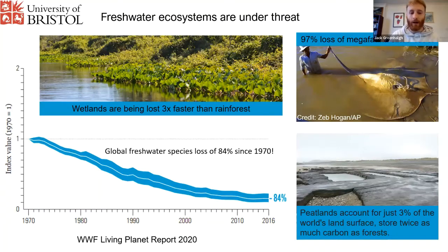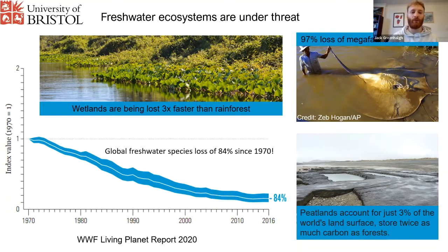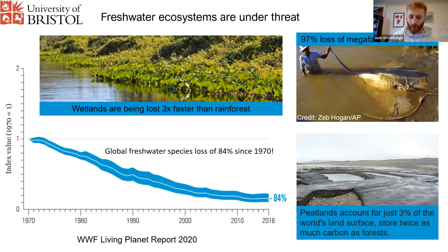In the UK, we have a particular issue with peatlands and peatland bog extraction. Peatlands are an incredibly valuable freshwater ecosystem. Although they account for just 3% of the world's land surface, they store twice as much carbon as forests. And obviously when we extract the peat from these peat bogs, all of that carbon is released.